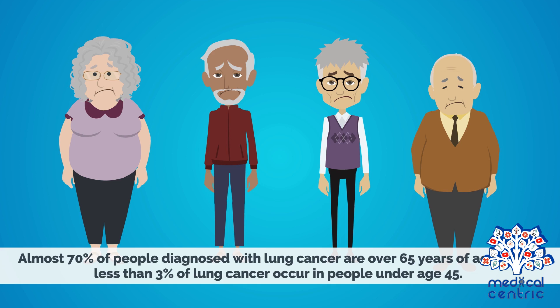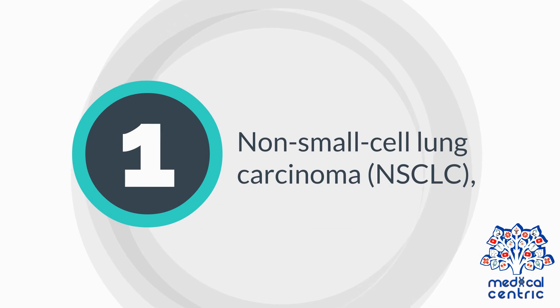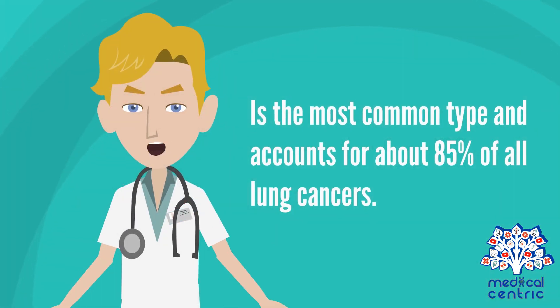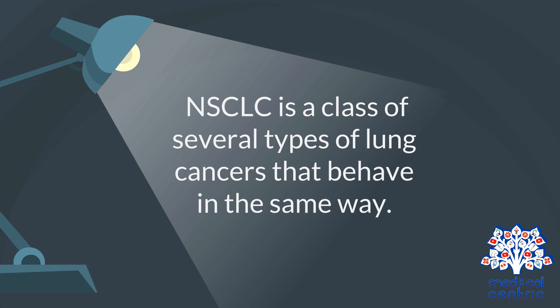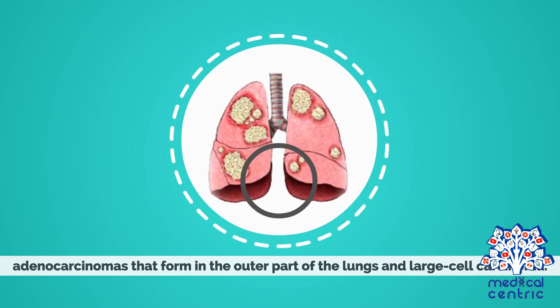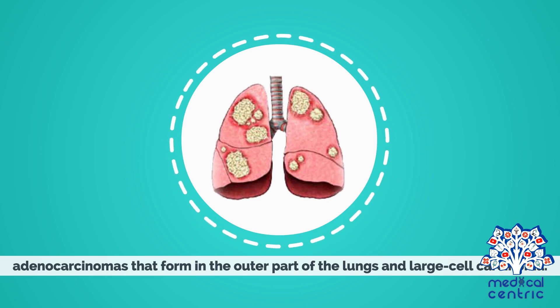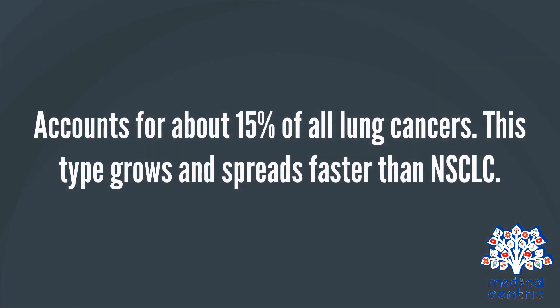The two general types of lung cancer are non-small cell lung carcinoma, or NSCLC, which is the most common type and accounts for about 85% of all lung cancers. NSCLC is a class of several types that behave in the same way. The most common types are squamous cell carcinoma, adenocarcinomas that form in the outer part of the lungs, and large cell carcinoma. Small cell lung cancer, or SCLC, accounts for about 15% of all lung cancers and grows and spreads faster than NSCLC.